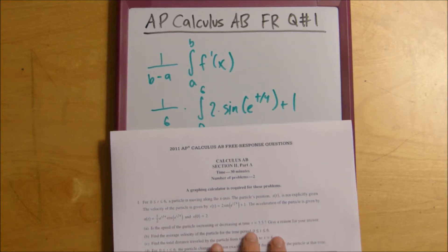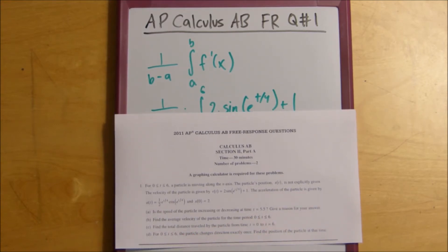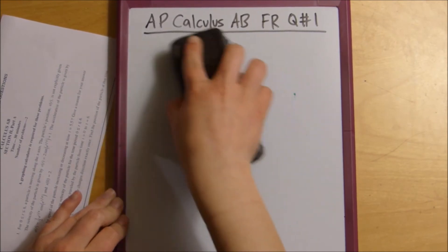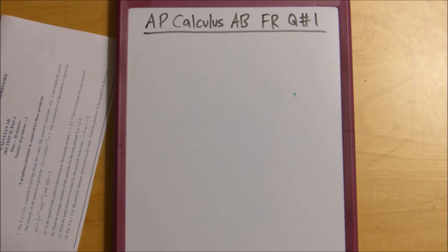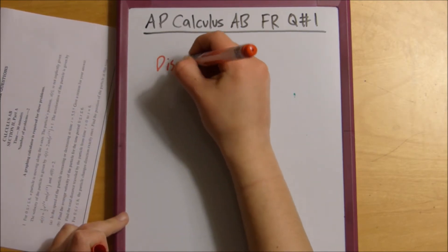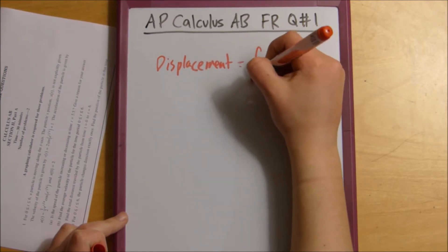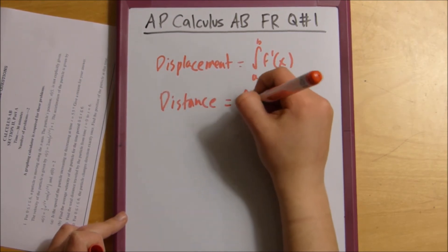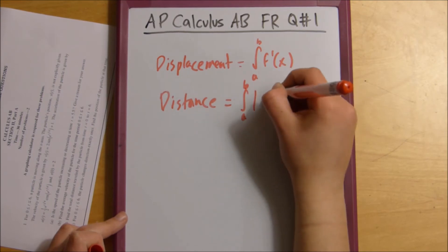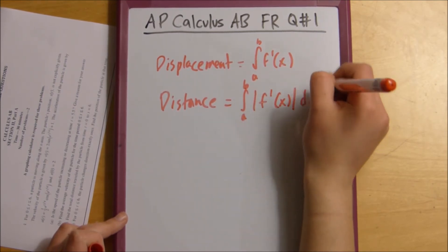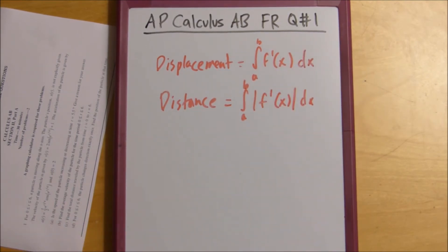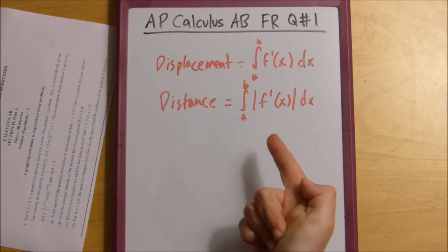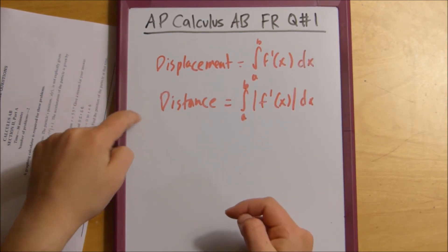And then the third part of the question says to find the total distance from time t equals 0 to time equals 6. Because we know that displacement is equal to the integral from a to b of f prime of x and distance is the integral from a to b of the absolute value of f prime of x. Make sure to include these absolute value bars because you will get docked down points because there is a difference between displacement and distance.